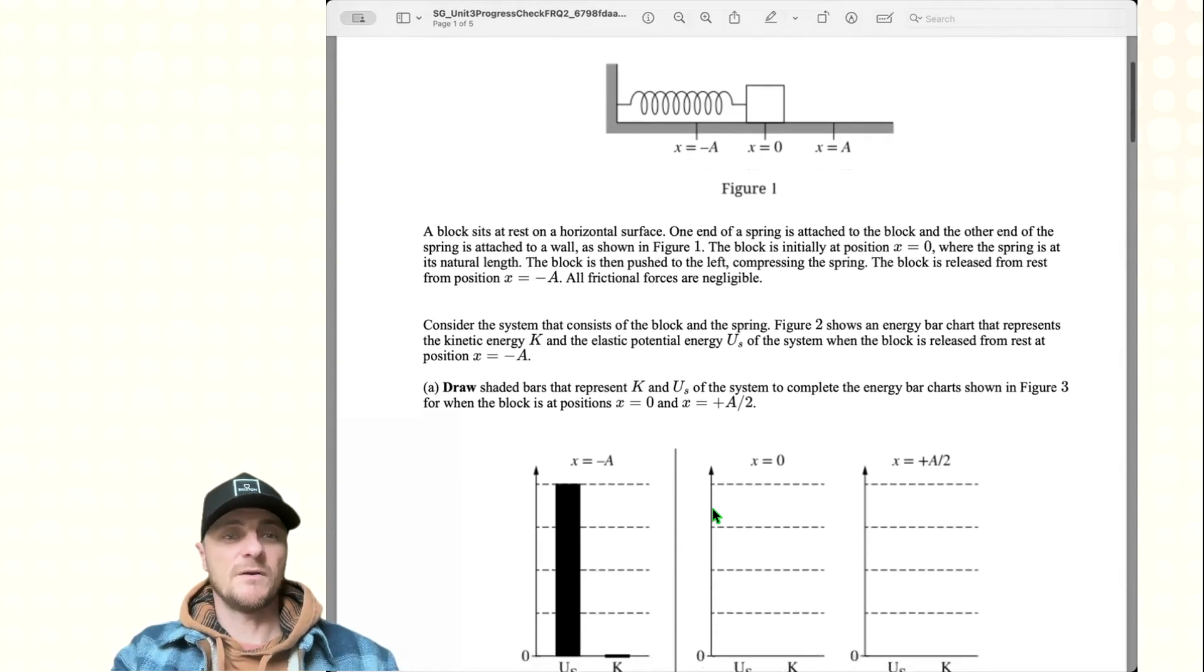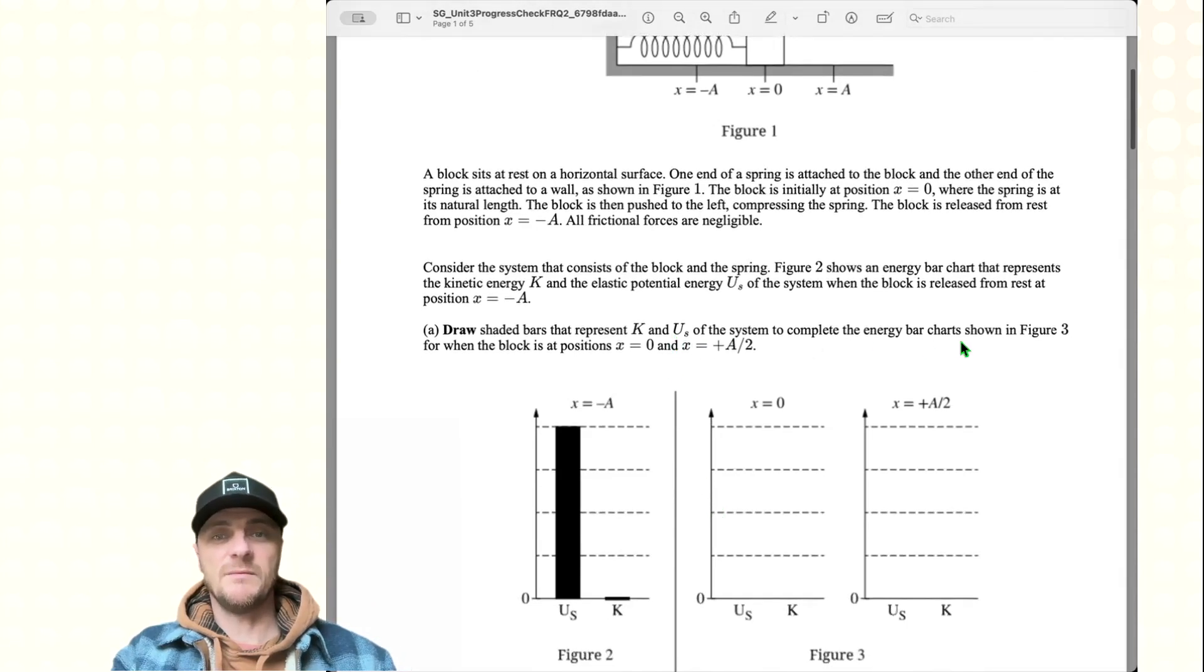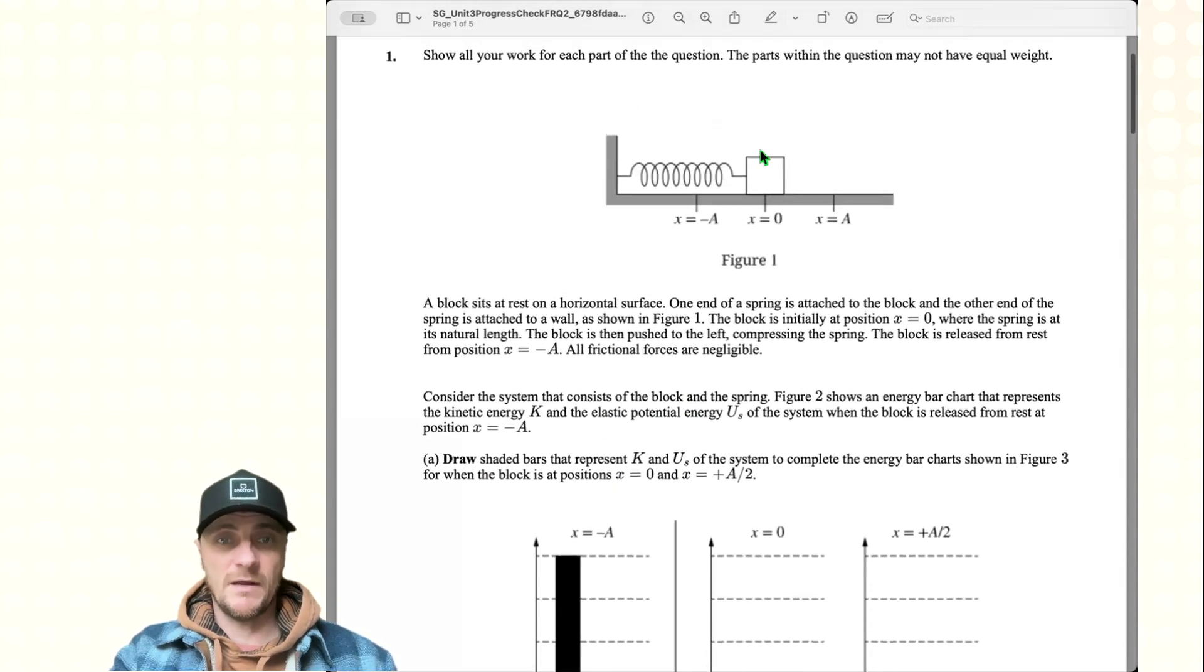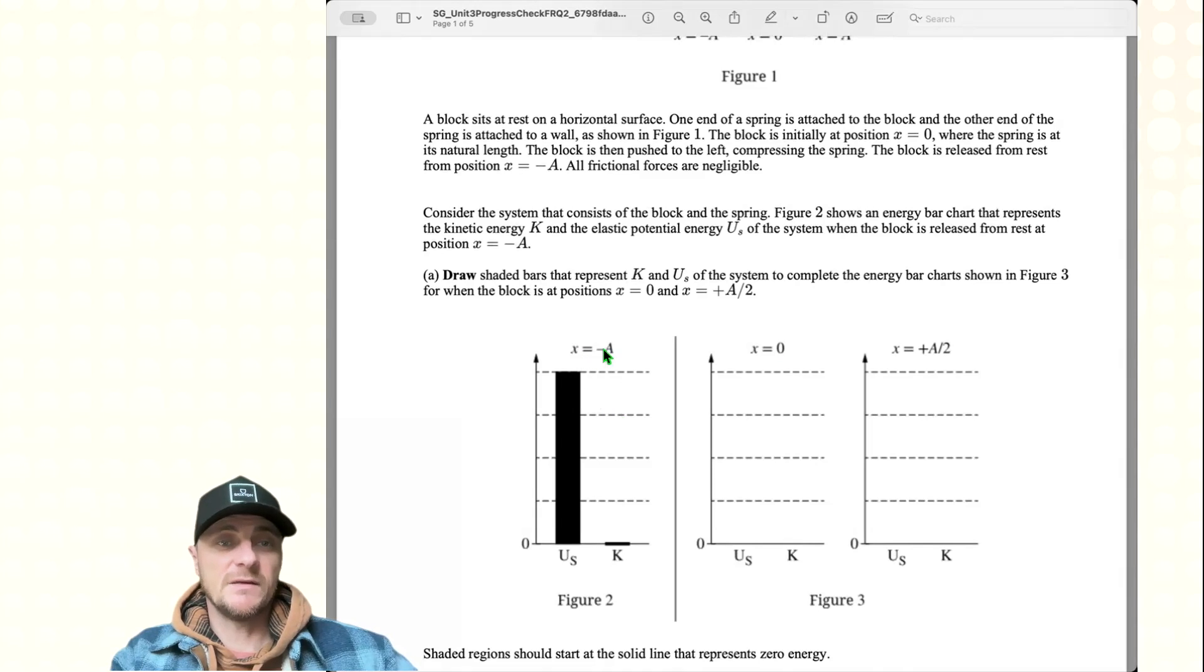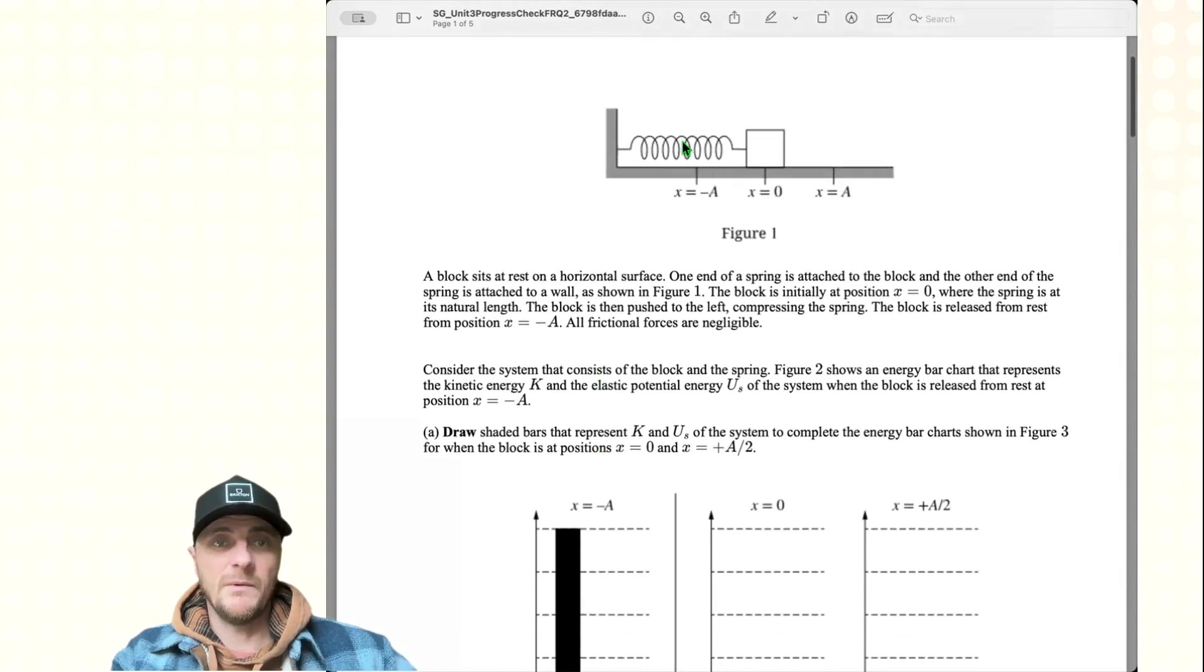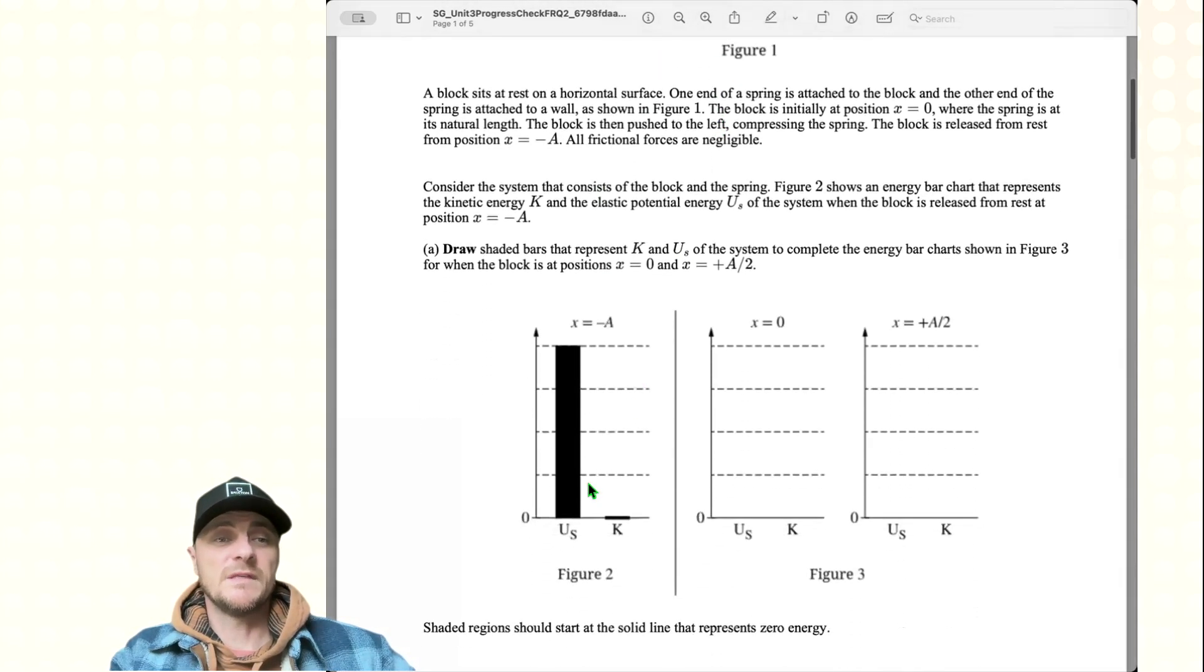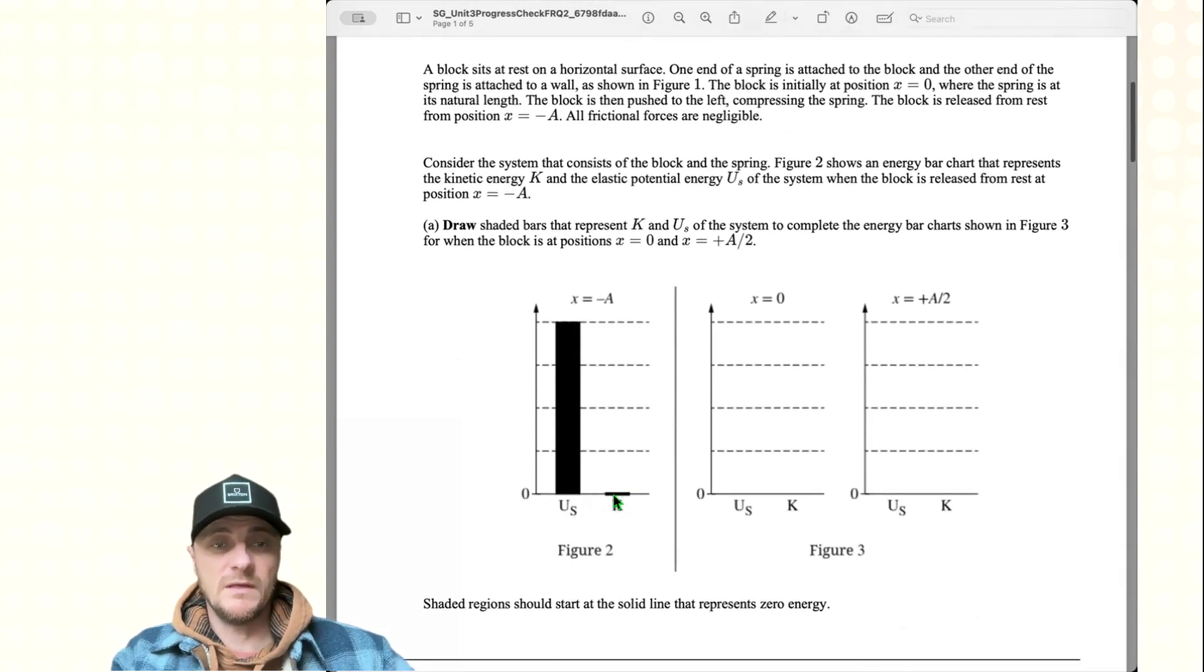Part a: Draw shaded bars that represent k and u sub s of the system to complete the energy bar chart shown in figure 3 for when the block is at positions x equals 0 and x equals positive a divided by 2. They've given us the energy at x equals negative a. If the block is right here, we have complete compression of the spring and the block would be momentarily at rest. All the energy is tied up in the potential energy of the spring with zero kinetic energy. When we have zero energy for either one, they want us to put a line indicating that it has zero energy.